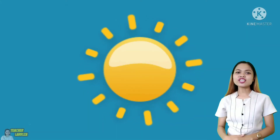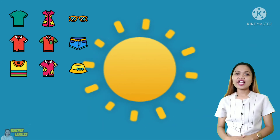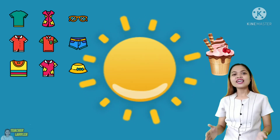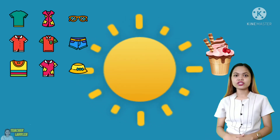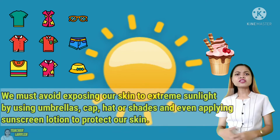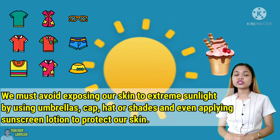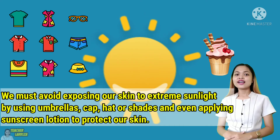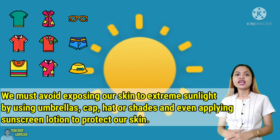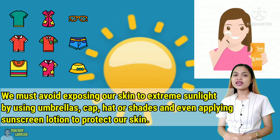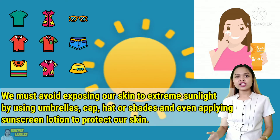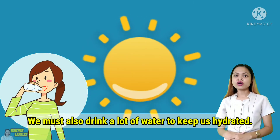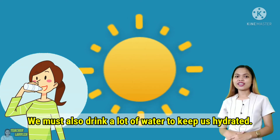During sunny days, we wear light-colored clothes and eat cold foods like ice cream and shakes. We must avoid exposing our skin to extreme sunlight by using umbrellas, caps, hats, or shades, and even applying sunscreen lotion to protect our skin. We must also drink a lot of water to keep us hydrated.